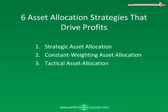The next strategy is Dynamic Asset Allocation. With this active strategy, you constantly adjust the mix of assets as markets rise and fall and the economy strengthens and weakens. You sell assets that are declining and purchase assets that are increasing, making Dynamic Asset Allocation the polar opposite of a constant weighing strategy. For example, if the stock market is showing weakness, you sell stocks in anticipation of further decreases, and if the market is strong, you purchase stocks in anticipation of continued market gains.